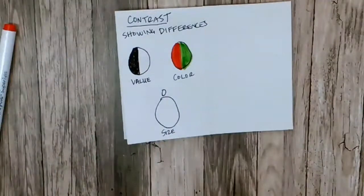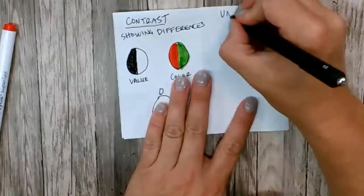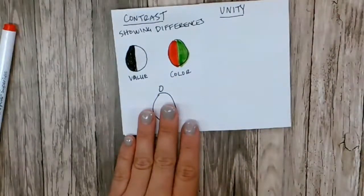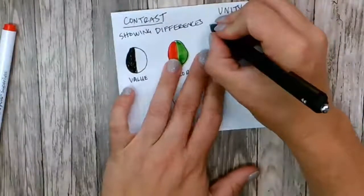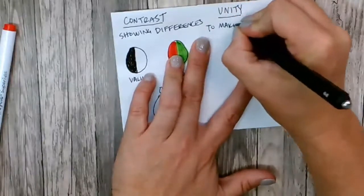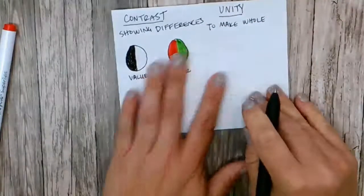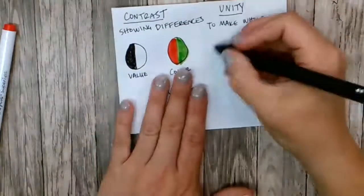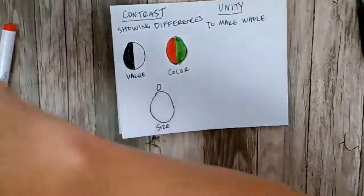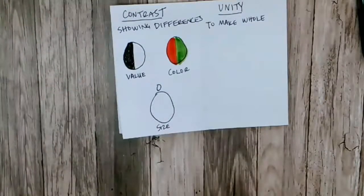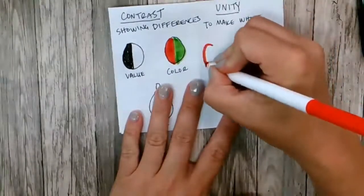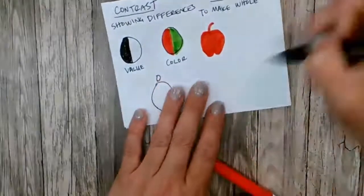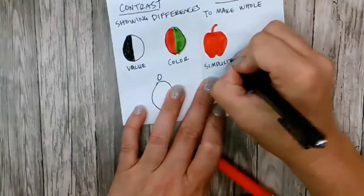Next is unity. And unity is creating a harmony using the elements that is seen as the whole rather than separate parts. So to make whole. And we can create unity with simplicity. For example, an apple. That's an apple. It's a very simple apple.